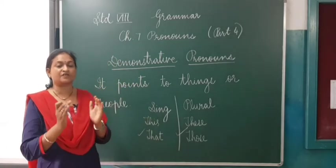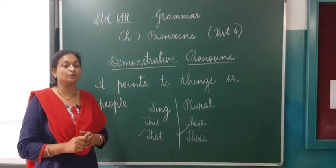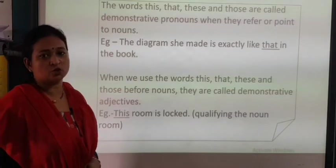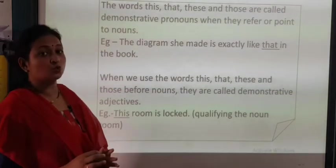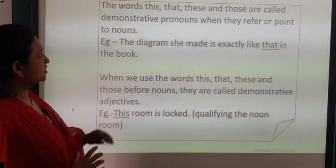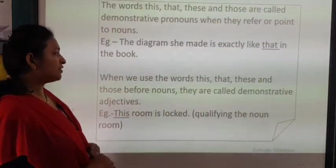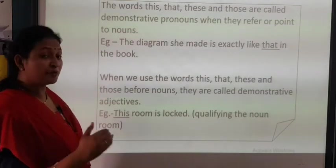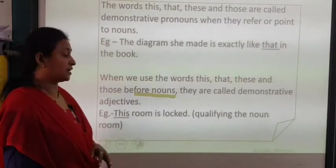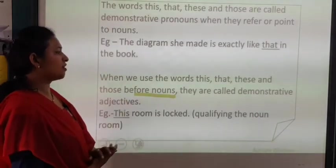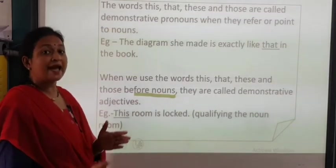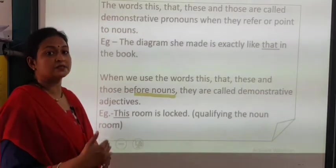If these basics are clear, it will be very easy for you to do the exercise. The words 'this,' 'that,' 'these,' and 'those' are called demonstrative pronouns when they refer to or point to nouns — for example, 'The diagram she made is exactly like that in the book.' When we use 'this,' 'that,' 'these,' and 'those' before nouns, and since they are describing a noun, we call them demonstrative adjectives — for example, 'This room is locked.' Demonstrative words can be used for both pronoun as well as adjective.